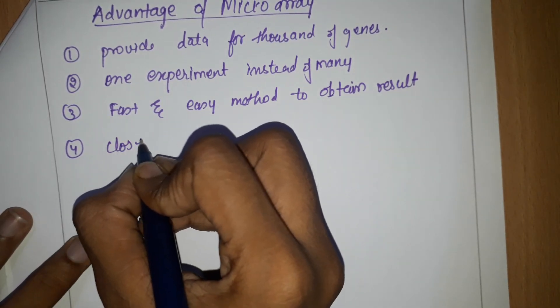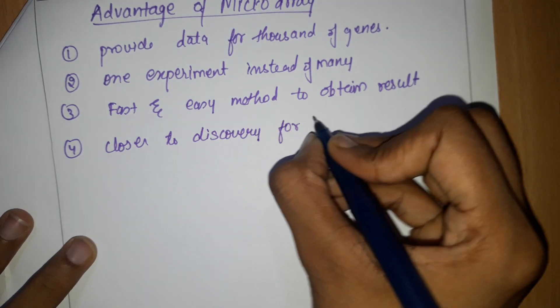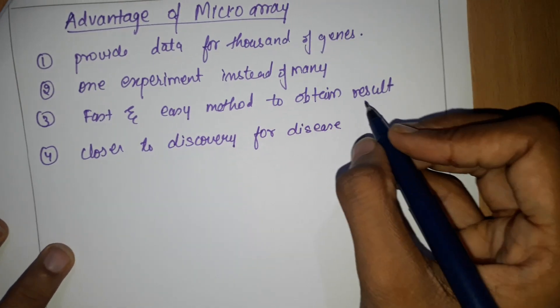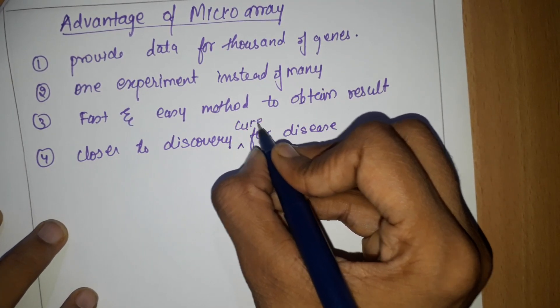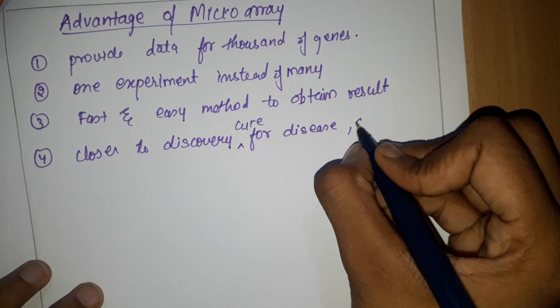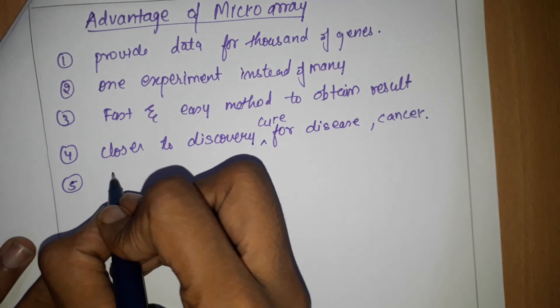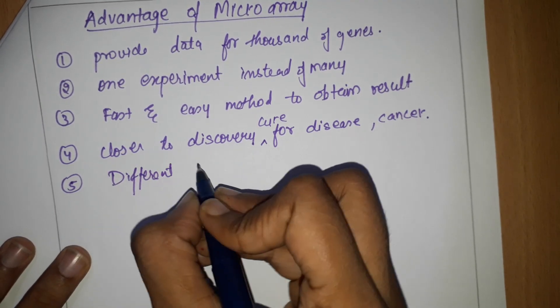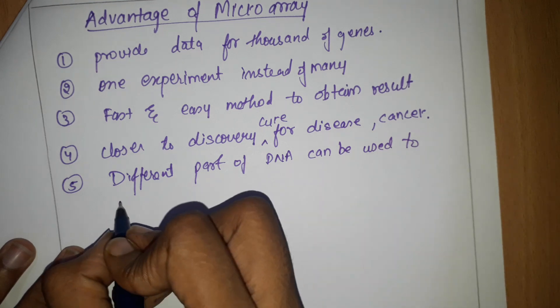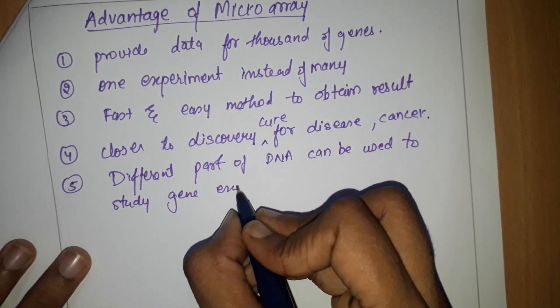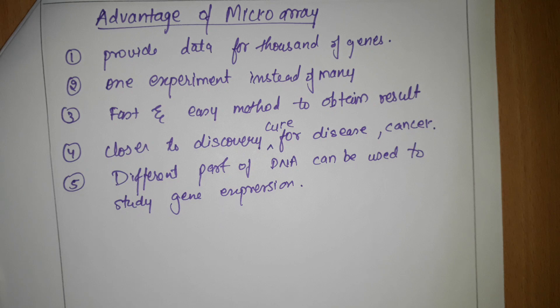Next, it is very close to the discovery for the cure of diseases, especially cancers. Next, different parts of DNA can be used to study gene expression. These are the advantages of microarray or DNA chip.